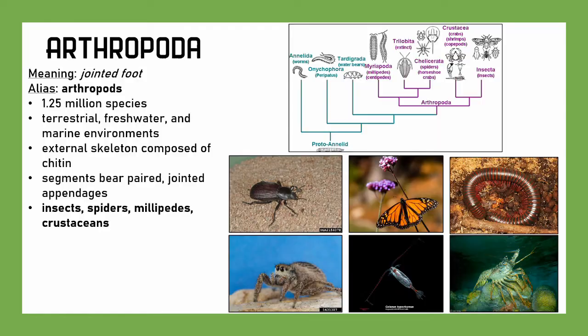Let's dive right into our biggest one: Arthropoda. For each of these, I'll give a meaning, other names, and salient features, as well as examples for the major groups. Arthropods means 'jointed foot.' There are 1.25 million species — with many more undiscovered. They come in all sorts of environments: terrestrial, freshwater, marine. They have external skeletons composed of chitin. Their segments have paired jointed appendages. They include things like insects, spiders, millipedes, crustaceans, things you eat like lobster, and things your food eats, like copepods.